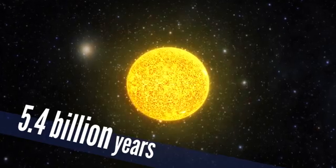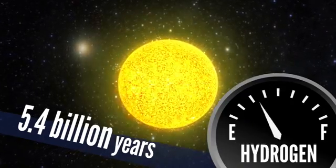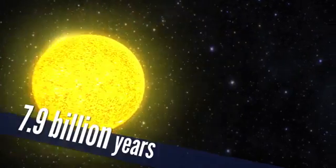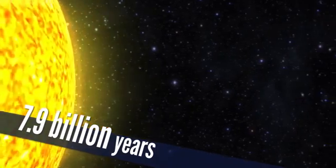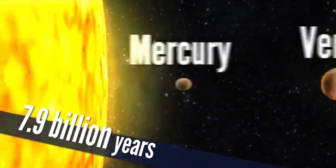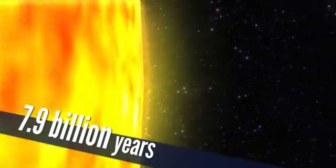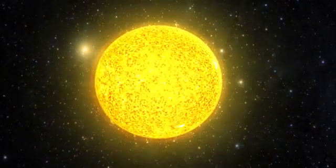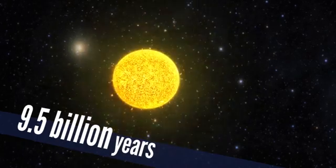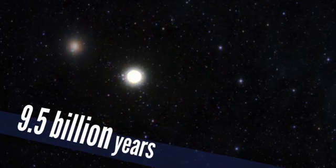Assuming our star makes it out in one piece, by this time, it starts to run out of gas. By 7.9 billion years, our sun swells up more than 250 times wider than it is today. Mercury and Venus are toast. That planet-eating balloon deflates 9.5 billion years down the line, leaving a white dwarf in its place.